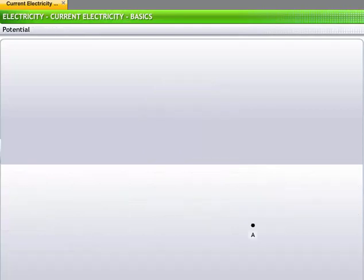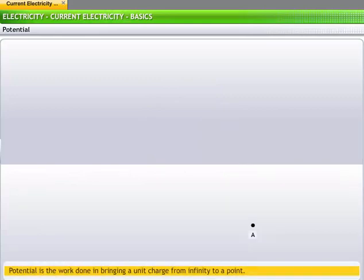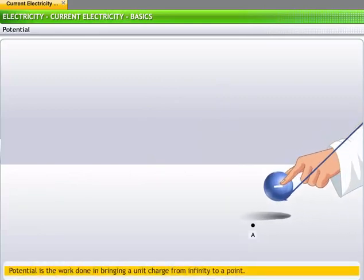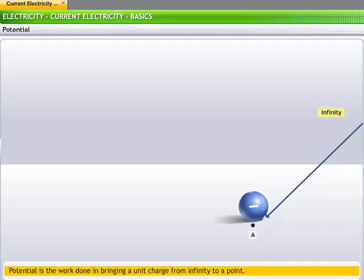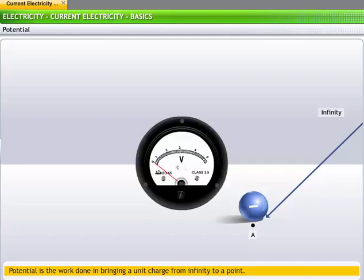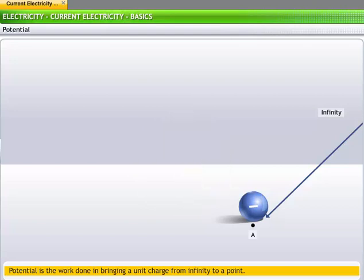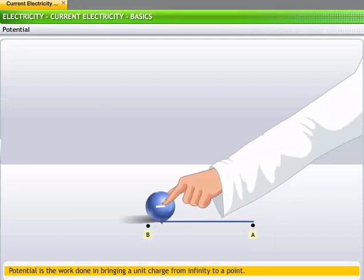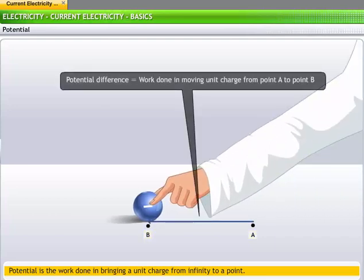As against potential difference, potential is the work done in bringing a unit charge from infinity to a point. Thus, if the work done to bring a unit charge from infinity to a point is 1 joule, then the potential at that point is 1 volt. In the given example, potential difference between points A and B is the difference in the work done in moving a unit charge from point A to B.